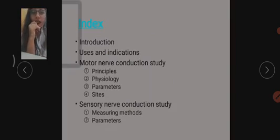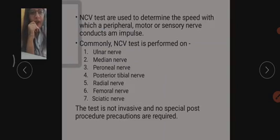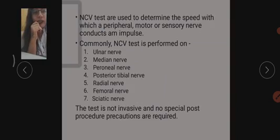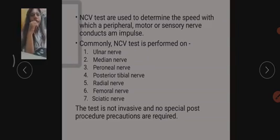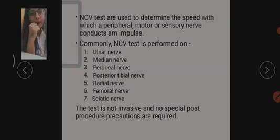NCV tests are basically used to determine how an impulse is conducted through a nerve. A nerve can be sensory, motor, or a mixed nerve. Commonly NCV tests are performed on the ulnar nerve, median nerve, peroneal nerve, posterior tibial nerve, radial nerve, femoral nerve, as well as sciatic nerve.